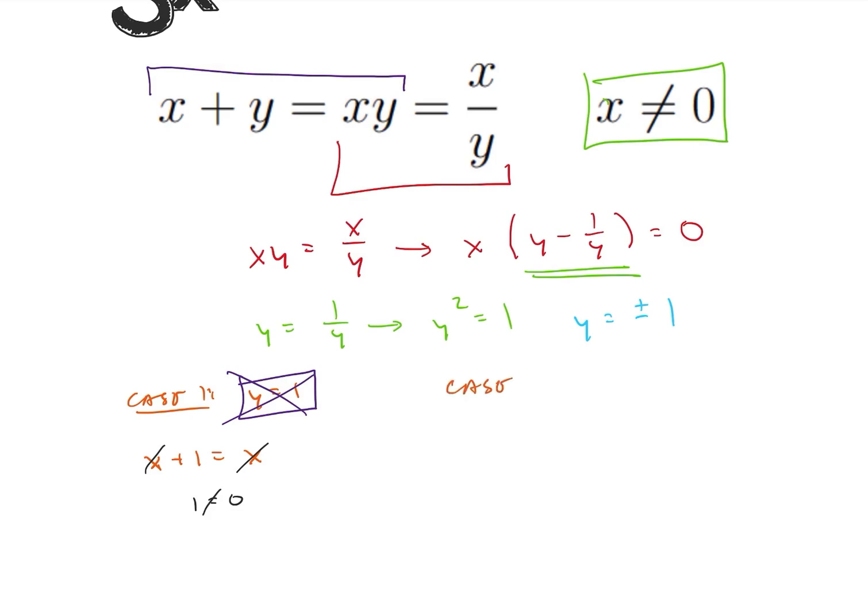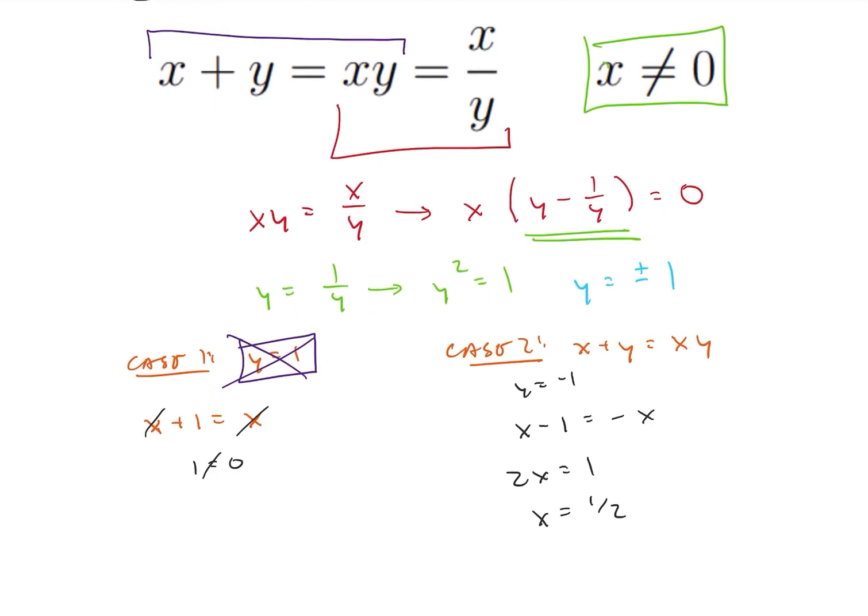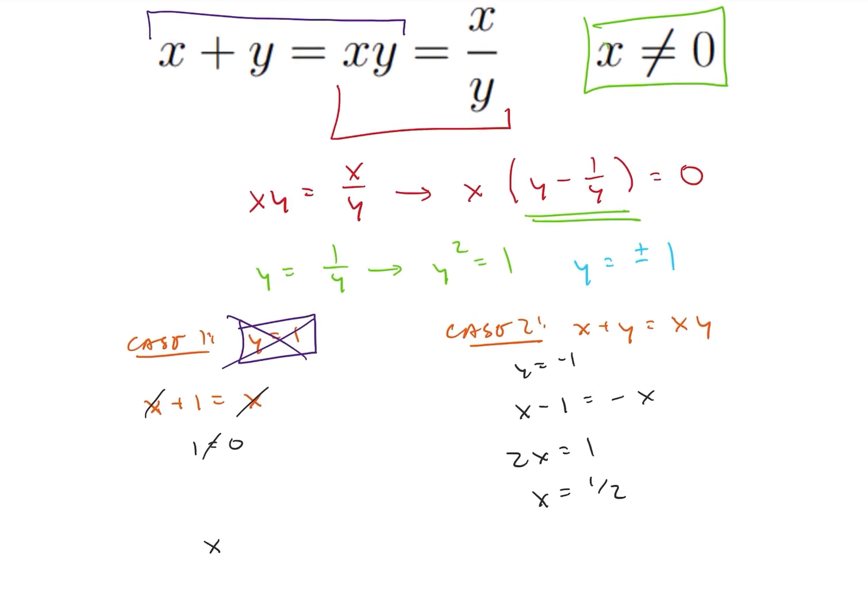However, if I look at case 2, I now have x plus y is equal to xy. If I plug in my y equals negative 1, then I have x minus 1 is equal to negative x. I can rearrange this and I'm going to get 2x is equal to 1 and x is equal to 1 half. So it looks like this is going to be my solution where x is equal to 1 half and y is equal to negative 1.